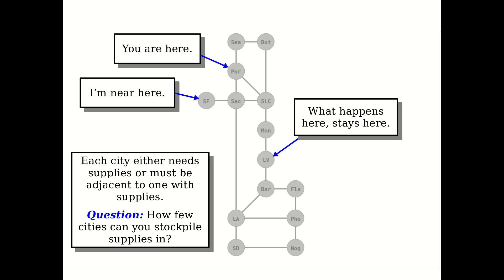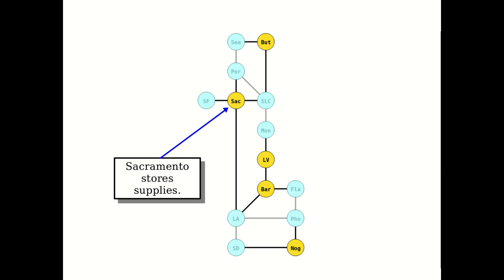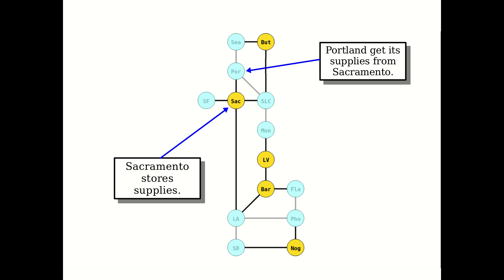It's a very challenging problem to solve. If you look at the transportation grid and think about how few cities you need to cover it, it would be tricky to come up with an answer you're sure is right. But once students write the correct backtracking algorithm, the computer can happily report that the minimum number of cities needed is five. Gold indicates a city has supplies — for example, Sacramento — while blue cities are covered by adjacent ones.